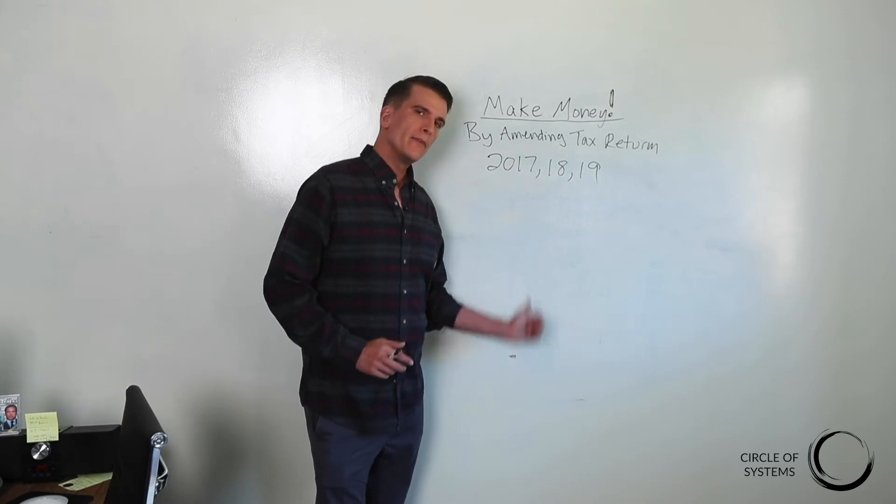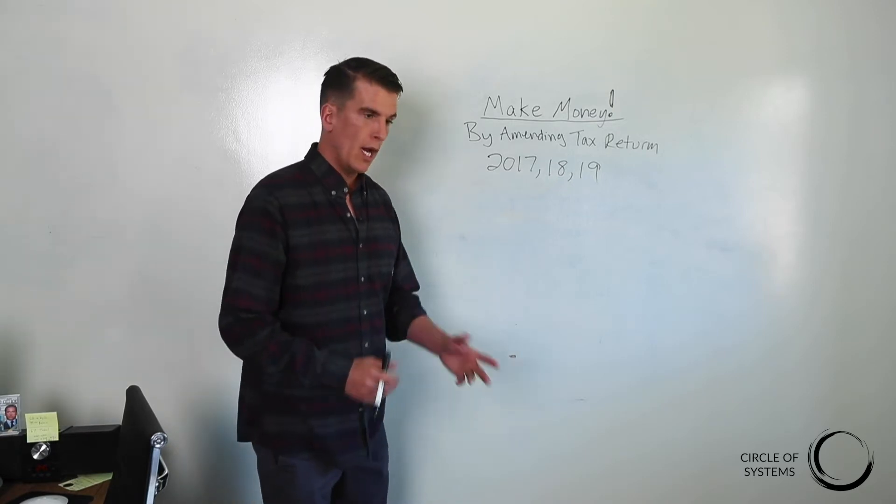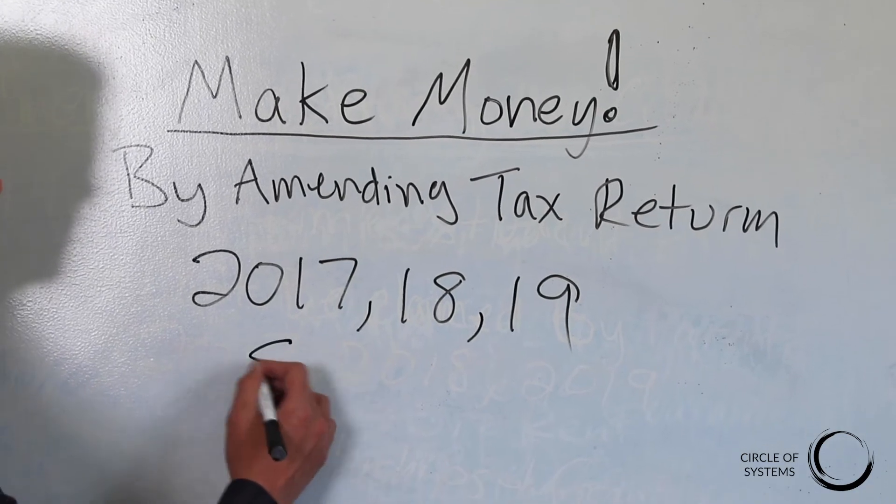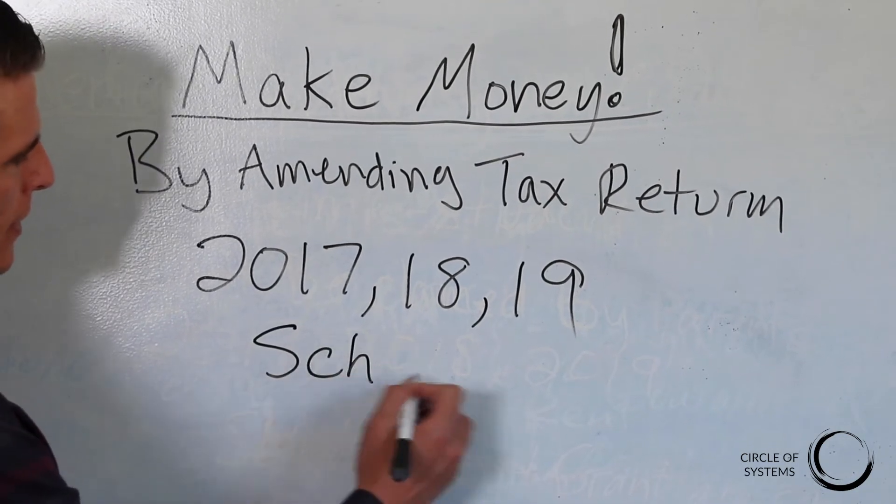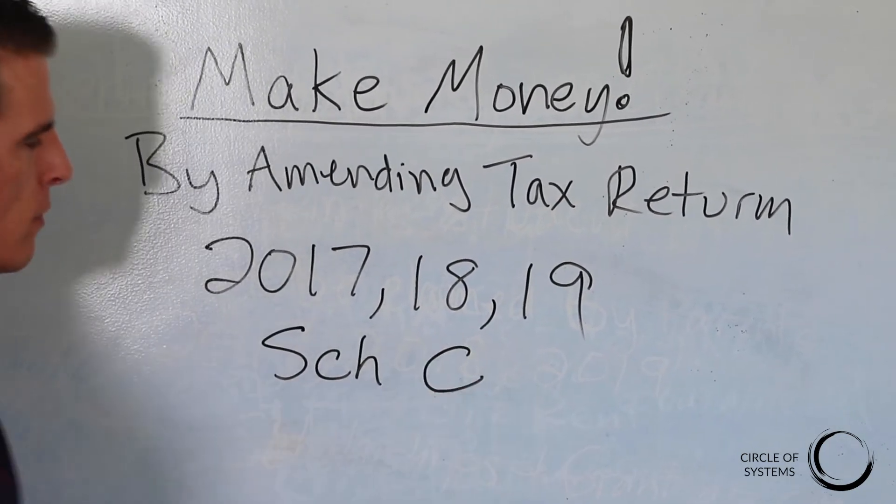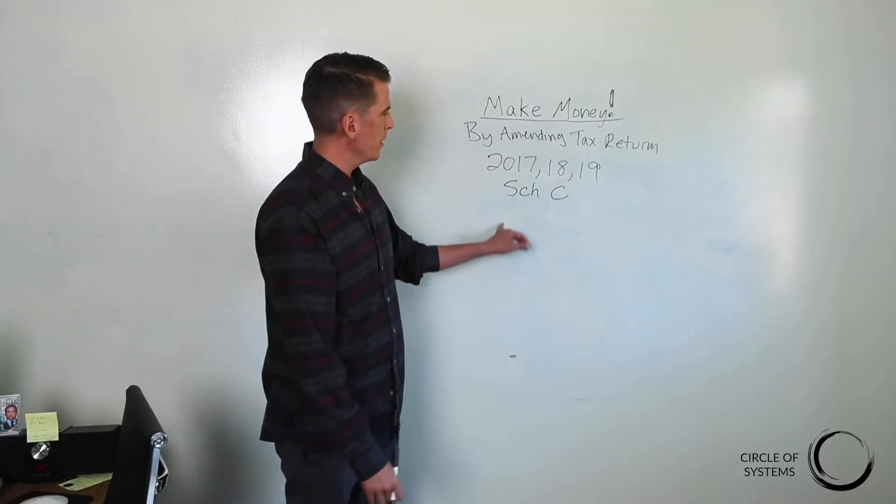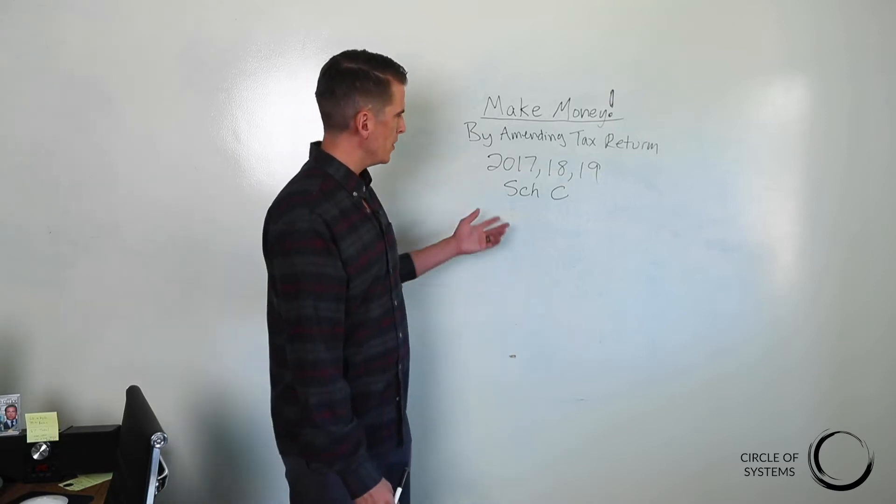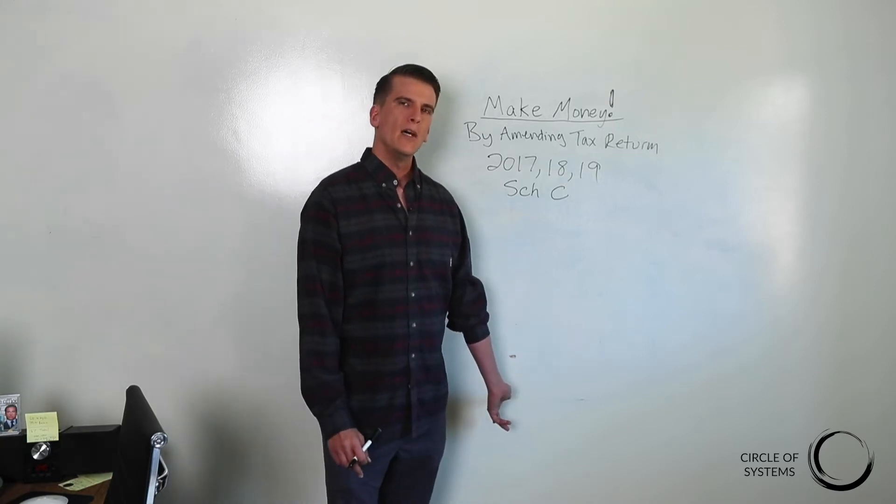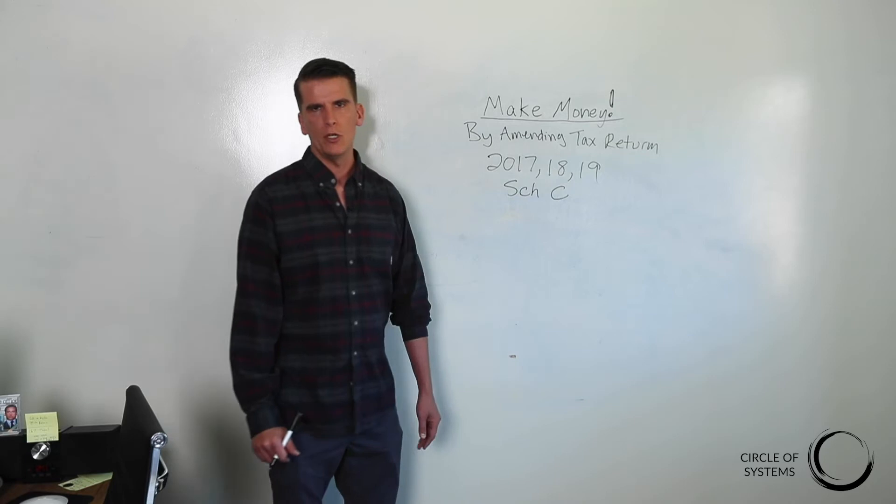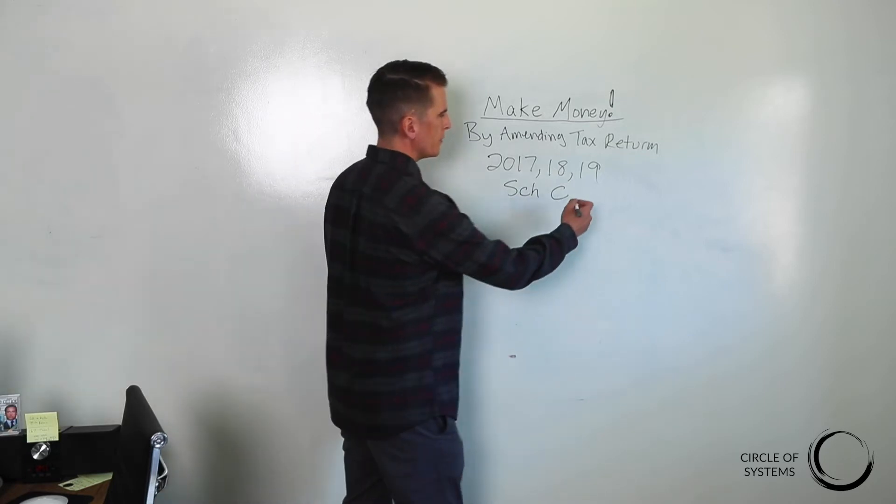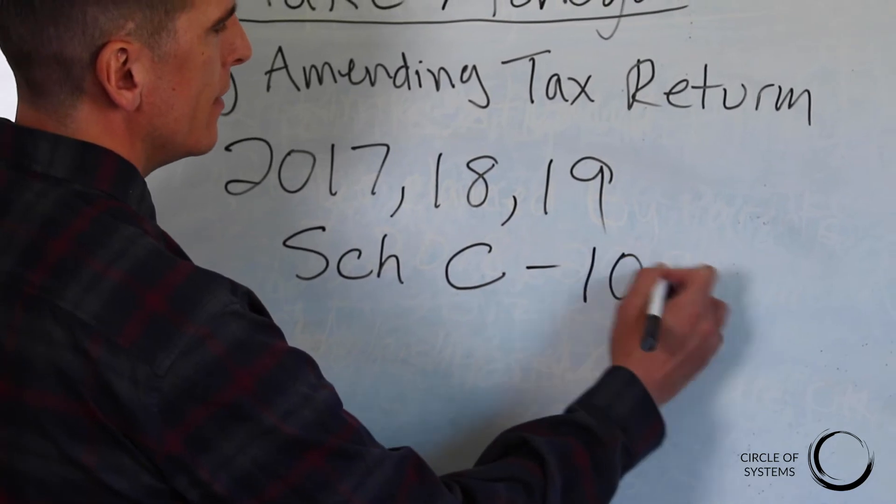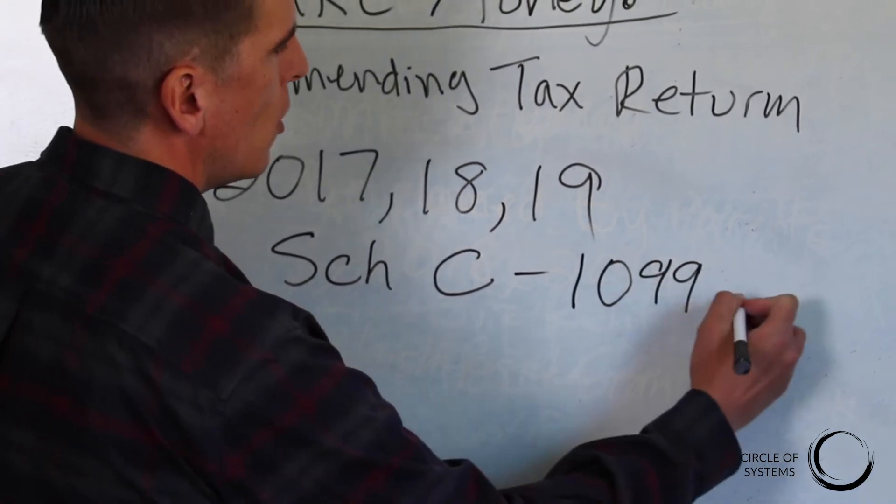There's a lot of different ways we can save you money. If you are on a Schedule C in any of those years, absolutely send your stuff over because that's one of the best areas for me to find mistakes and save you money. So many people have no idea how to take the expenses on their Schedule C tax return. You would have done a Schedule C if you had a 1099 or a small business.